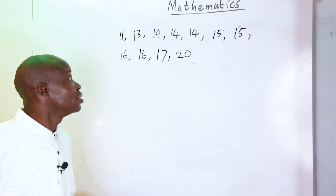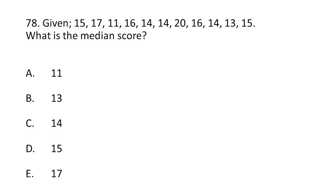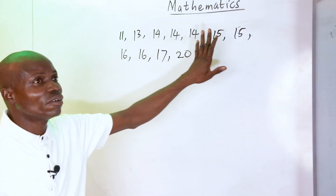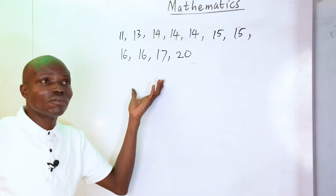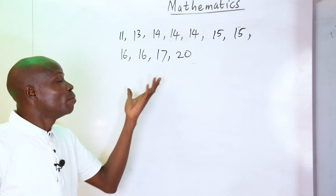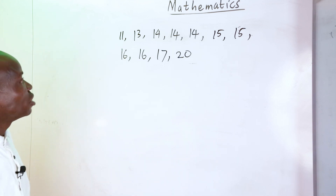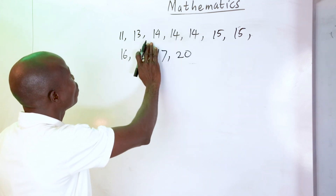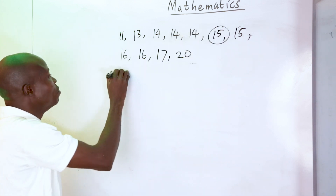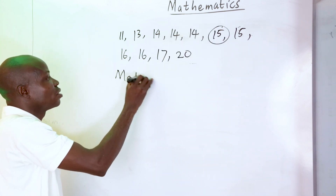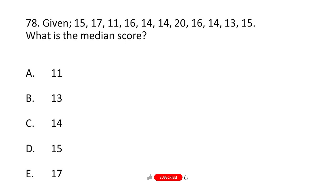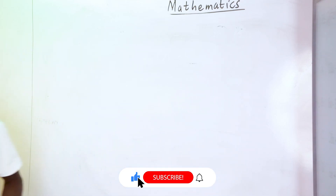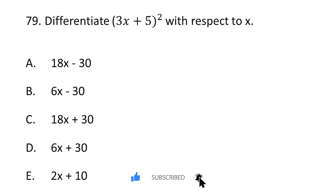Number 78: rearranging the data gives 11, 13, 14, 14, 14, 15, 15, 16, 16, 17, 20. With 11 numbers, the middle value is the 6th term, which is 15. The median is 15, which is option D.